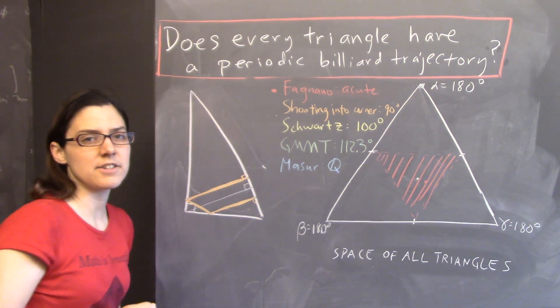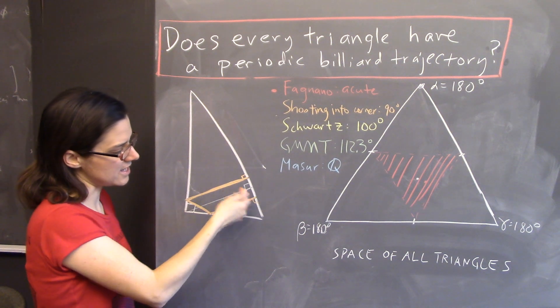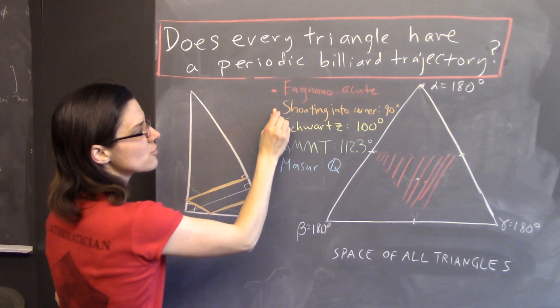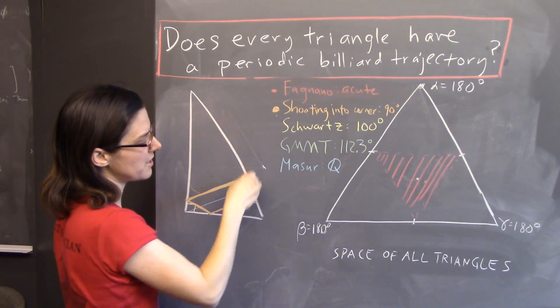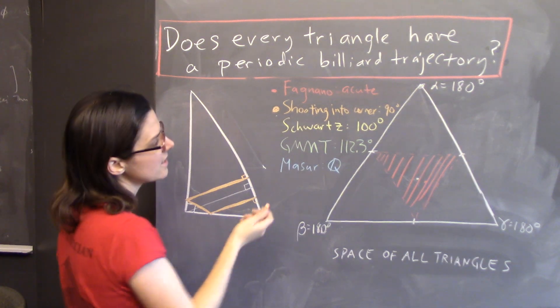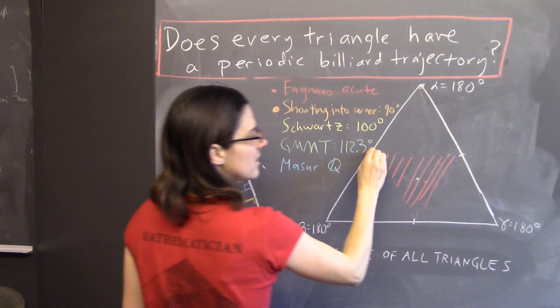My PhD advisor, Rich Schwartz, thought of this, and he calls it shooting into the corner. So, shooting into the corner gives us a periodic billiard trajectory of period 6 for any right triangle, and that's these.